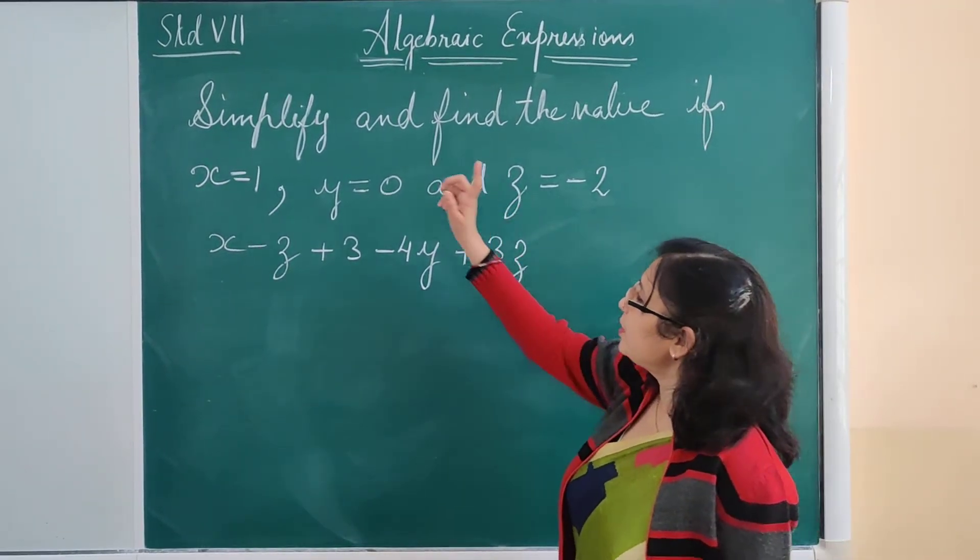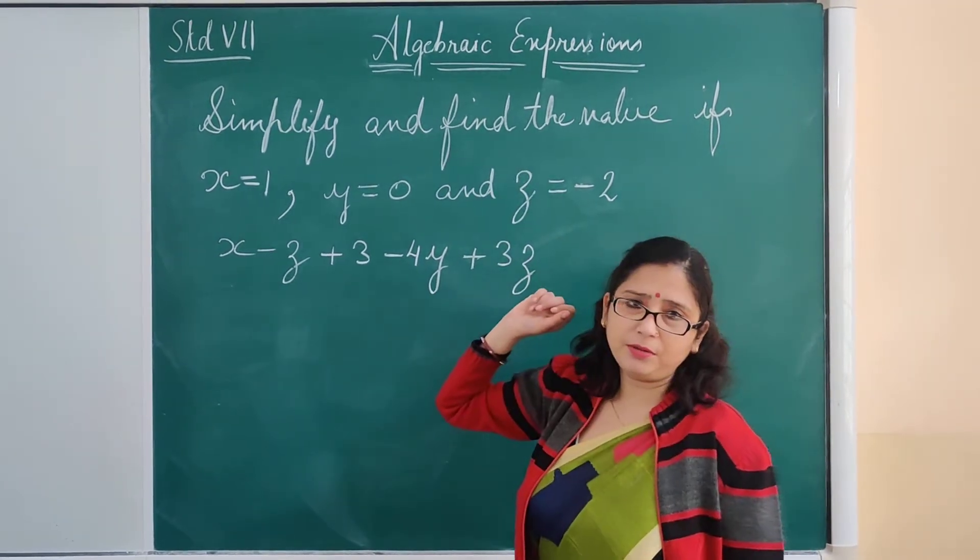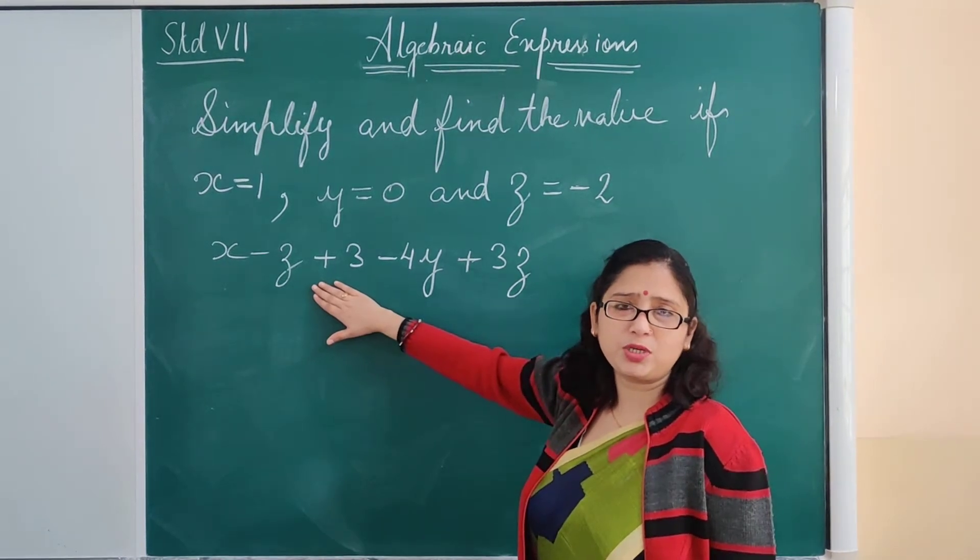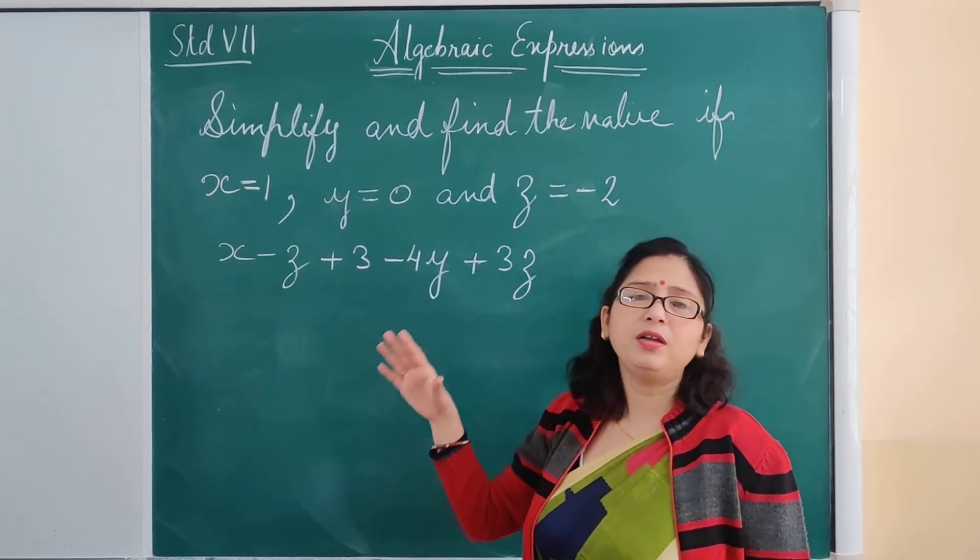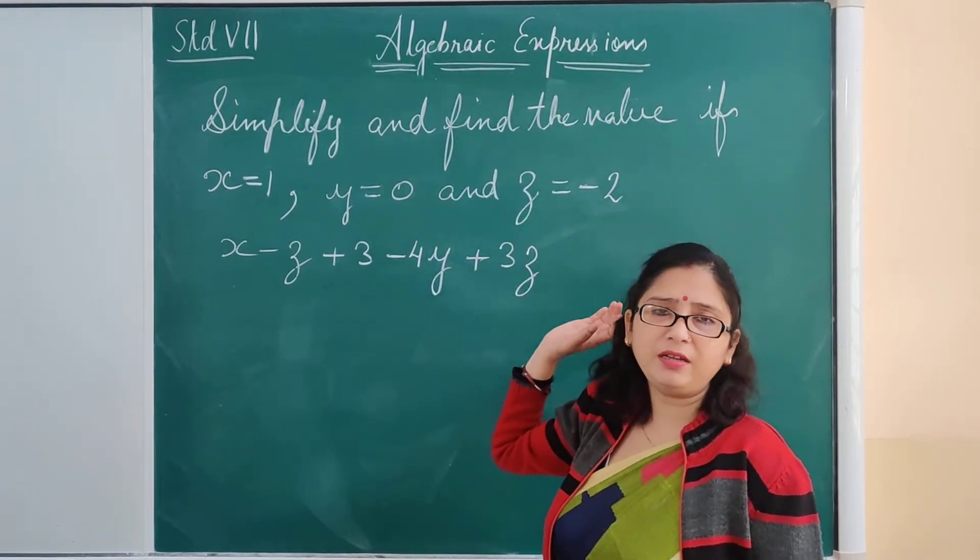Now here the question is to simplify and then find the value. That means we are going to first simplify this algebraic expression, and then we will put the values of x, y, z in their respective places and find the value.